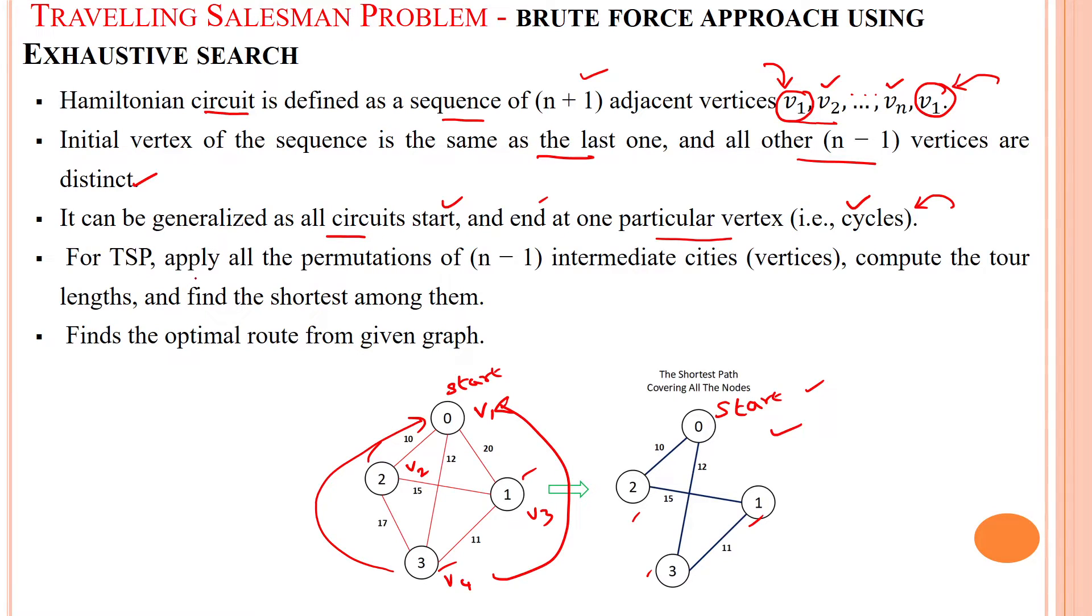Here apply all the permutations of n minus 1 intermediate cities, that is indicated as a vertex in the graph, and compute the path, that is tour length, to find out shortest among all the paths. So finally we have to find out optimal route which needs minimum cost for traveling to all the cities.